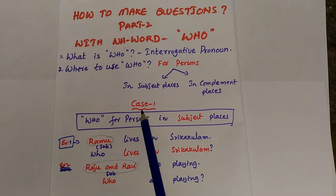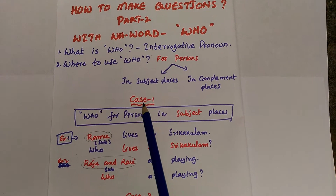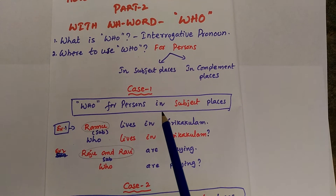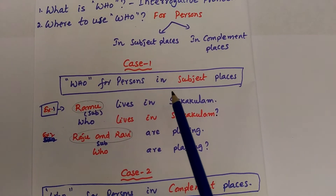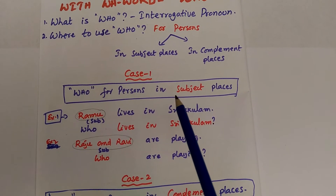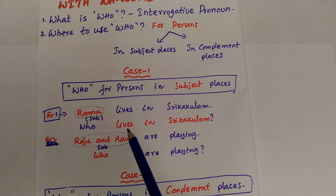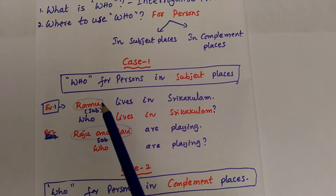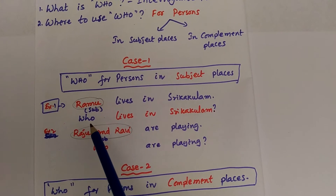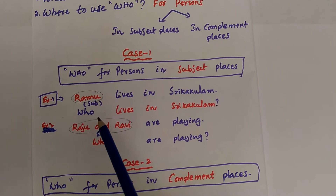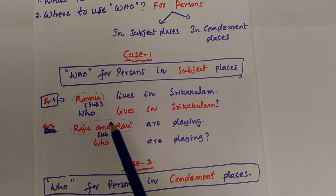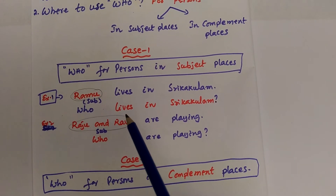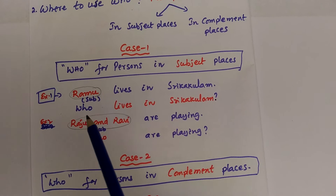Case number one: here we can find persons in the subject place. It will be very easy for us to make a WH word question with 'who' in these cases. Simply, the person in the subject place can be removed and in that place we can write 'who'. Then our required answer will be ready. Here, the verb cannot be changed into interrogative form, even if it is in question form.